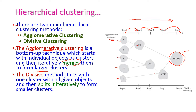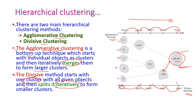Agglomerative is a bottom-up clustering method. The opposite is the divisive method, which starts from one cluster with all given objects and splits iteratively into smaller clusters. So divisive clustering starts from one single cluster with all the data and at every step the cluster is divided according to the relations between the data, until it reaches all individual items as single clusters.